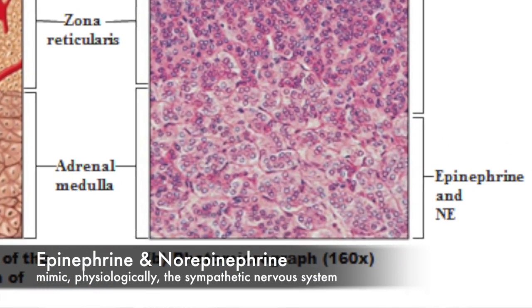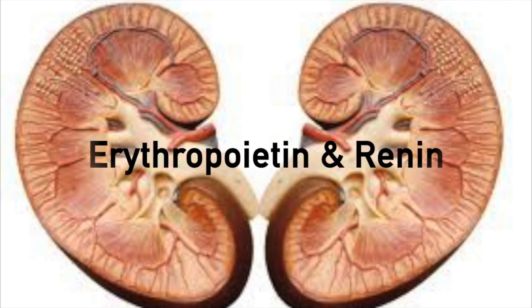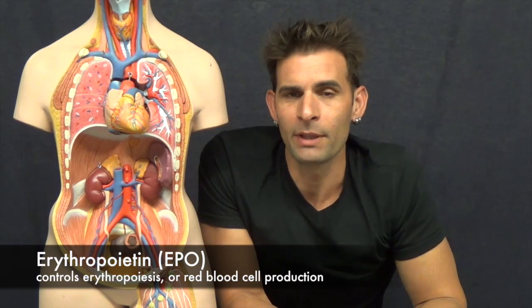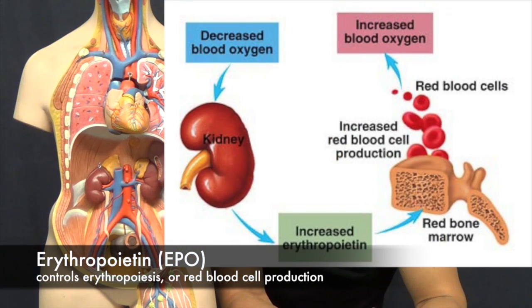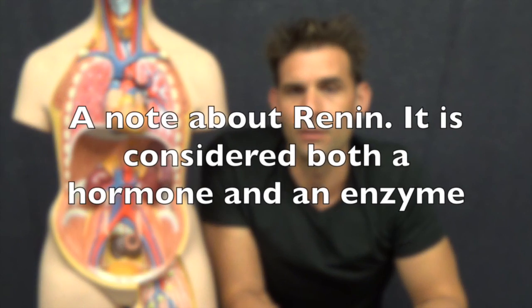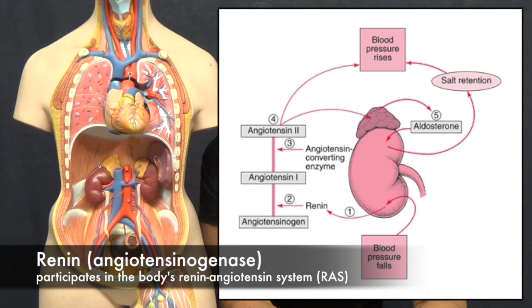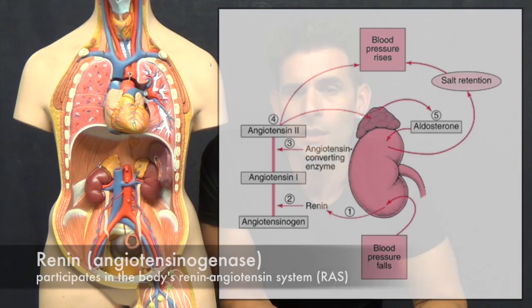The kidney secretes two hormones: erythropoietin, which acts on red bone marrow to increase red blood cells, and renin, which is used in regulating blood pressure.